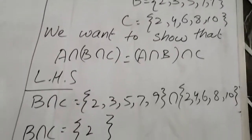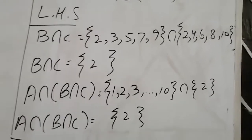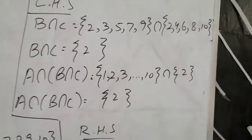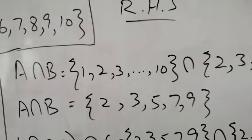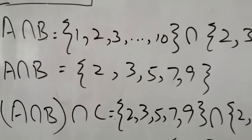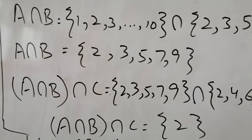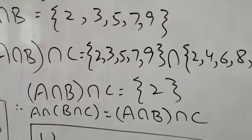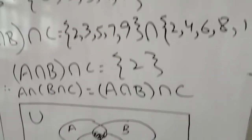First, we take B intersection C. Then we take A intersection with that result — the common element is 2. On the right side, we take A intersection B, which gives 2, 3, 5, 7, and 9. Then taking intersection with C gives 2. Both sides are equal, proving the associative property for intersection.